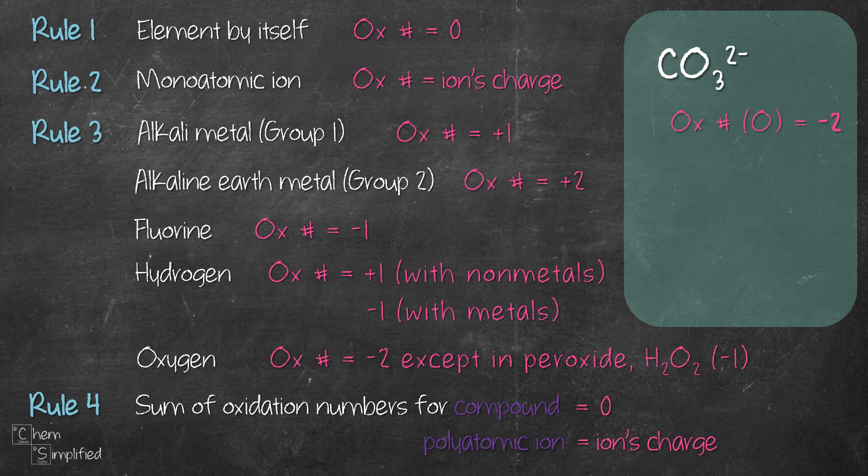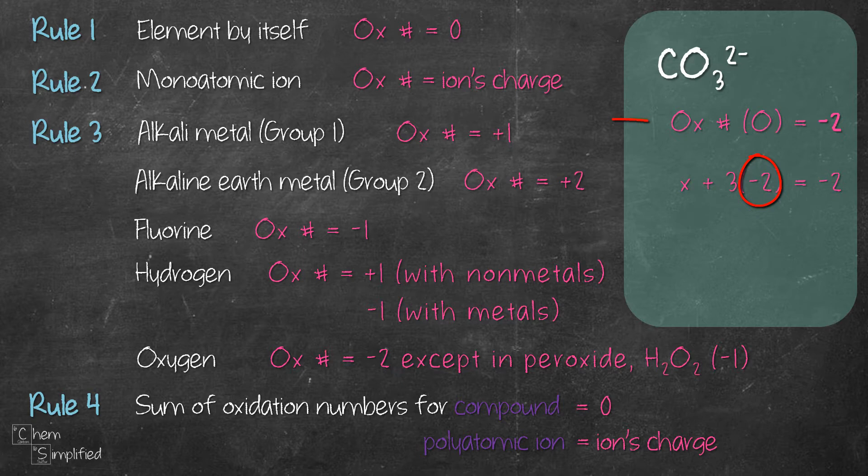We know that the oxidation number of oxygen from rule number three is minus two. So we can use that and apply rule four to find out the oxidation number for carbon. Since we don't know what is the oxidation number for carbon, we're just going to use x to represent it. So we have x plus three times negative two equals negative two. We multiply three because there are three oxygen, and we multiply three with negative two because negative two is the oxidation number of oxygen. And the whole thing adds up equals to negative two because that is the charge of CO32 minus.